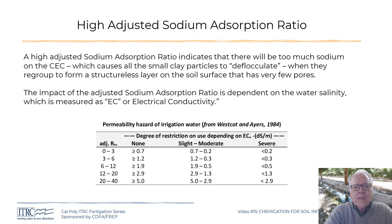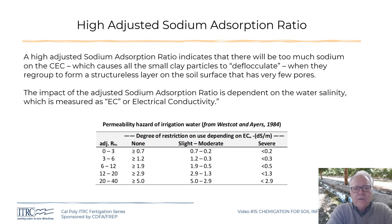It turns out it's not just that ratio but also the salinity that matters — you have to look at both together. This is the permeability hazard of irrigation water. There are three hazard levels — none, slight to moderate, and severe — depending on salinity. For example, an adjusted SAR of 0 to 3 with an EC less than 0.2 dS/m means very pure water with a very small SAR can still cause severe infiltration problems.